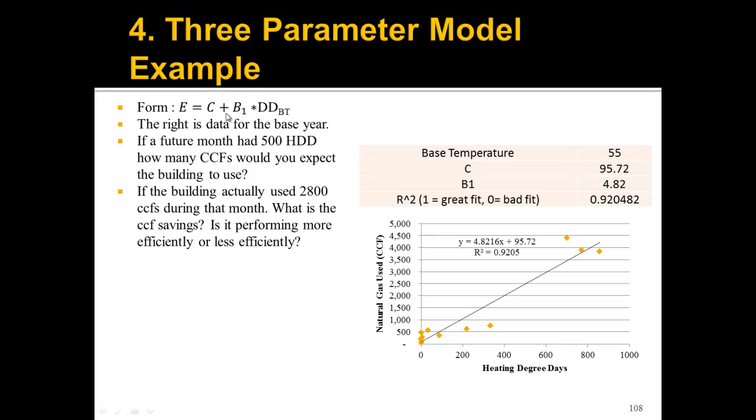Let's look at a little example. Here is what we ended up with as our best fit line for this graph. You can see it's a little bit different format. Y is the energy use, because this is natural gas used in CCF. X is the heating degree days, calculated at a certain balance point temperature. In this case, 55, you can see here. We have our B1 is 4.8216, and our C is 95.72. It's a decent fit with a 0.9205 R squared value.